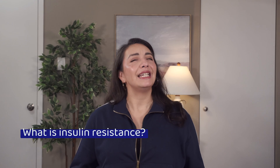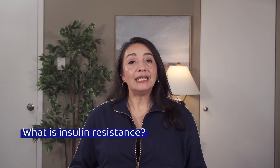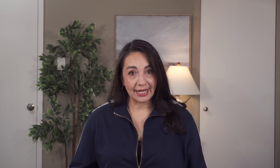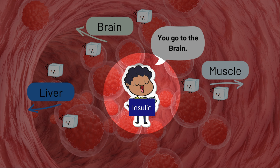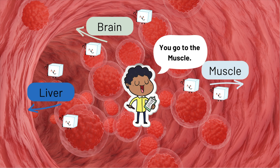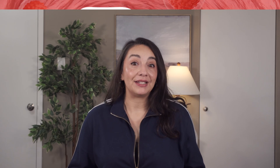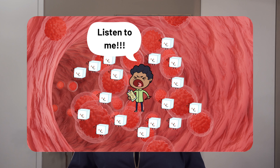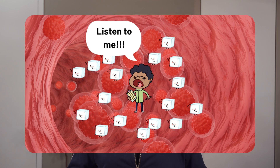What is insulin resistance? Well, insulin is a hormone that tells all of our tissues to take up the glucose, or sugar, floating around in our blood. The tissues can then use the glucose as energy. When we have insulin resistance, our tissues don't pay enough attention to our insulin, and this leaves too much glucose floating around in our blood. That high blood glucose level can then lead to a diagnosis of diabetes.